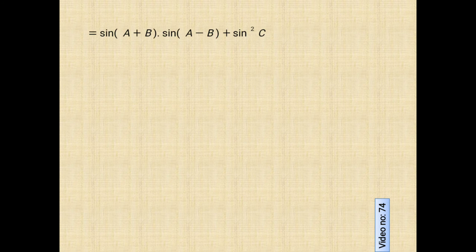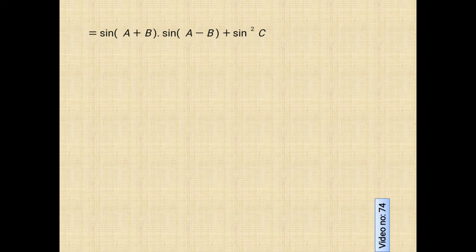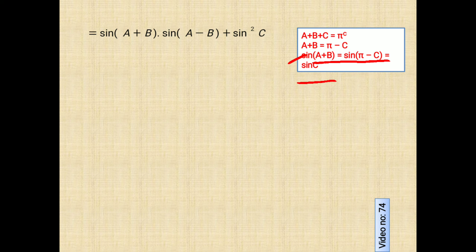Doing so, it will be like sin A plus B in bracket into sin A minus B in bracket plus sin square C. Now at this point, we will use the given angular information as given: A plus B plus C equals pi radian. Taking C on the right part, it is A plus B equals pi radian minus C. And keeping sin on both sides, we get sin A plus B equals sin pi radian minus C, which can be written as sin C following the cast rule of trigonometry.